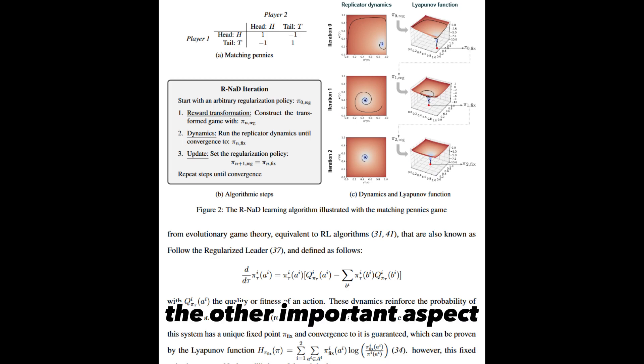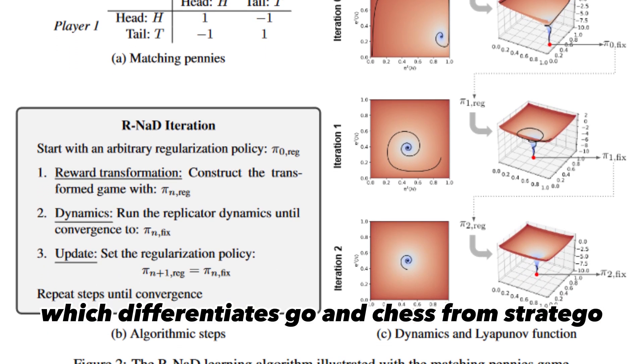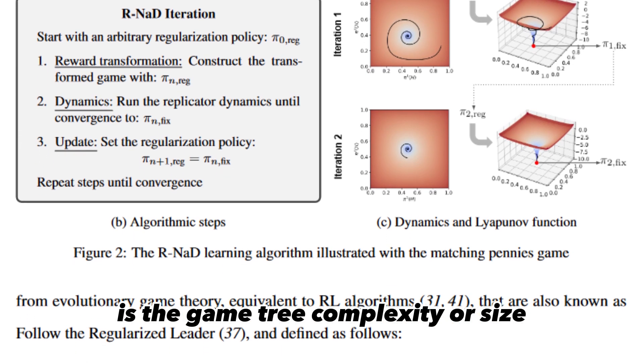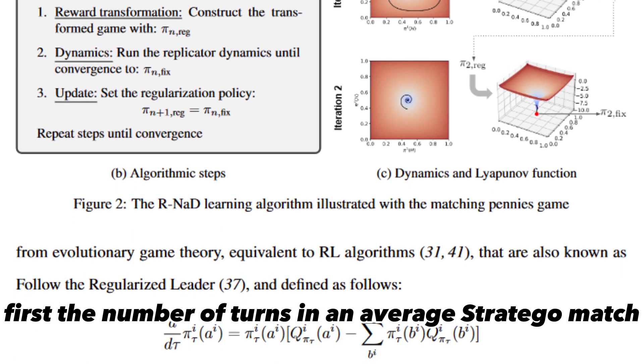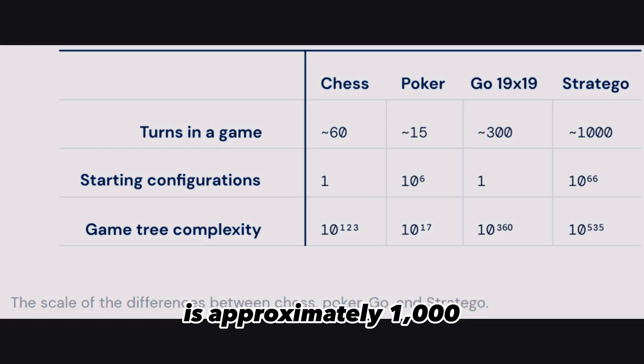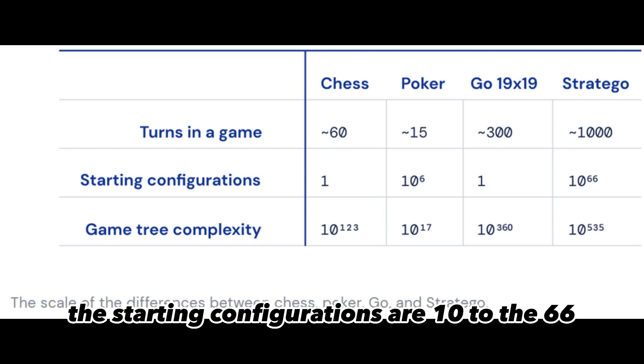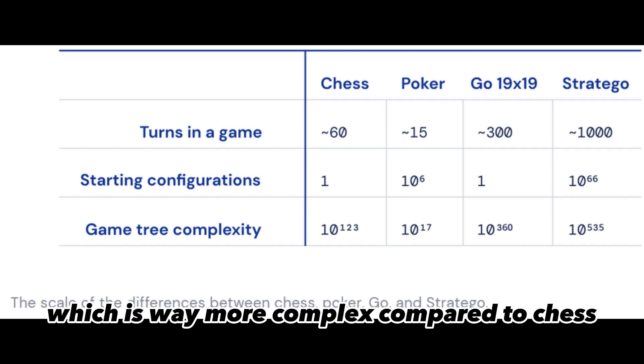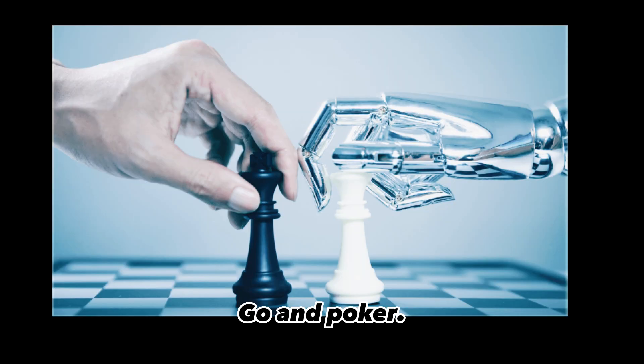The other important aspect which differentiates Go and Chess from Stratego is the game tree complexity or size. First, the number of turns in an average Stratego match is approximately 1,000. The starting configurations are 10 to the 66. Finally, the search tree exponent is gigantic, 535, which is way more complex compared to Chess, Go and Poker.